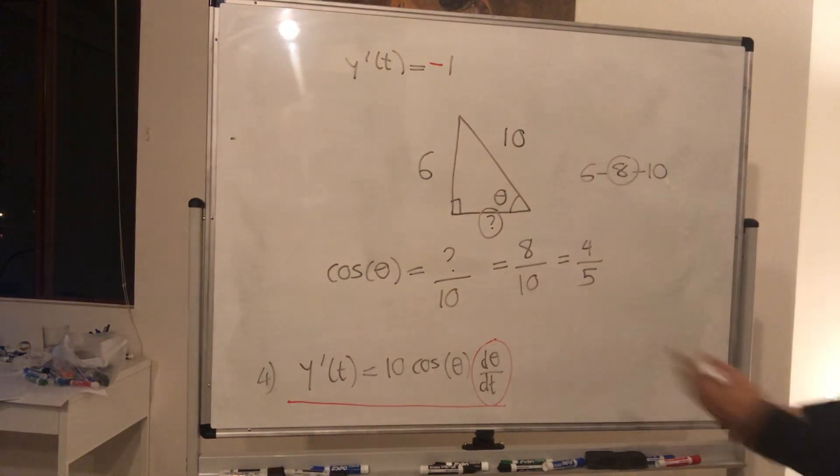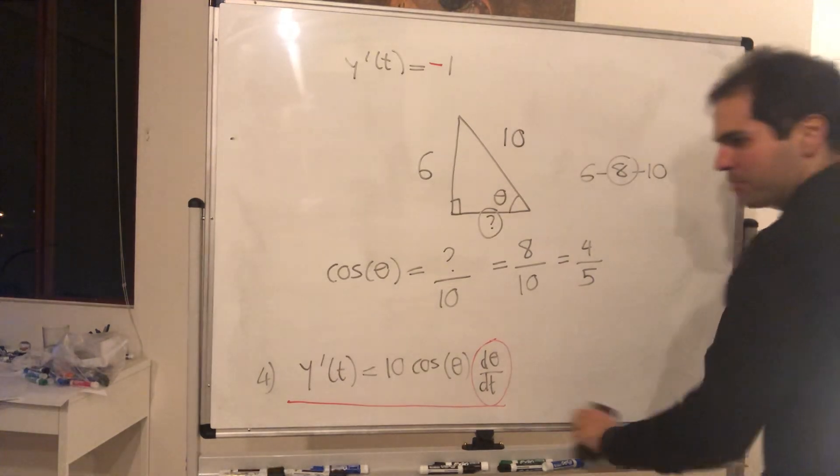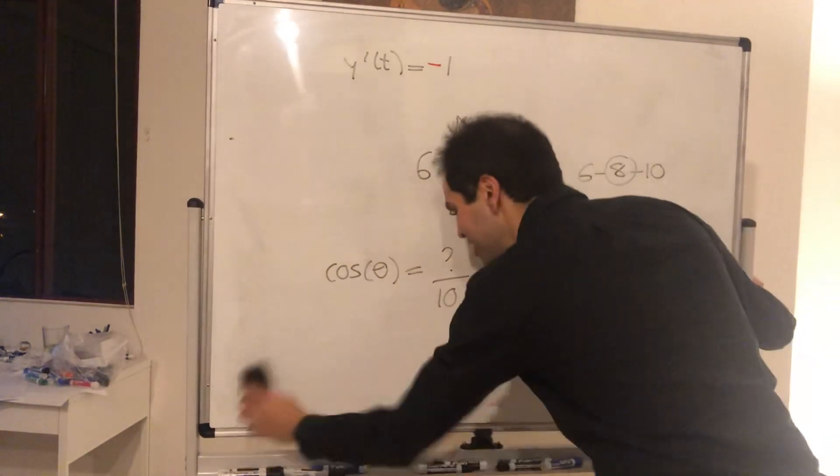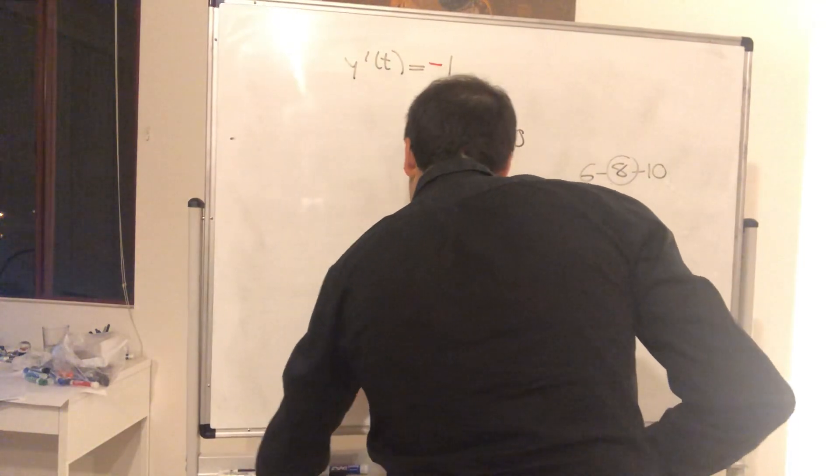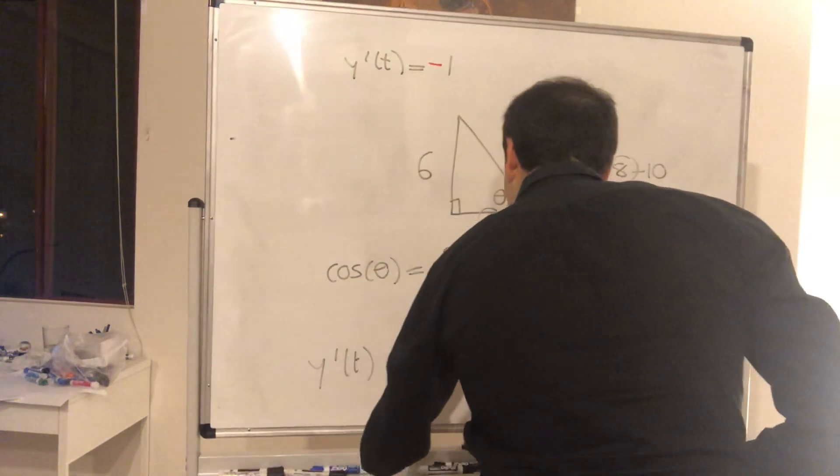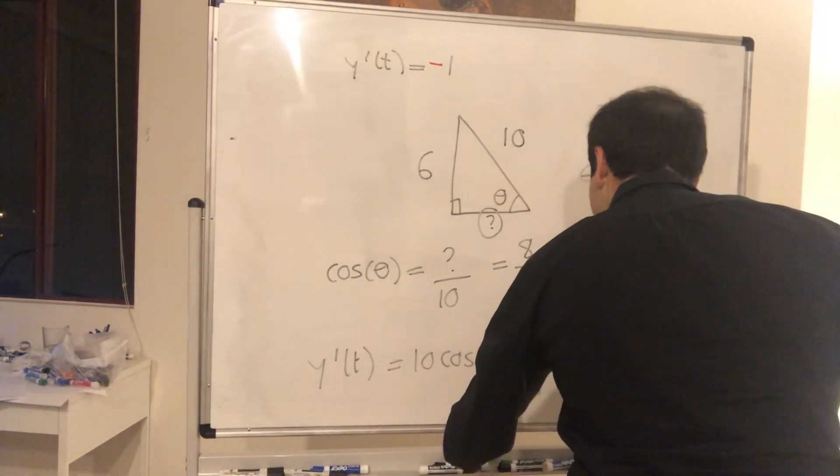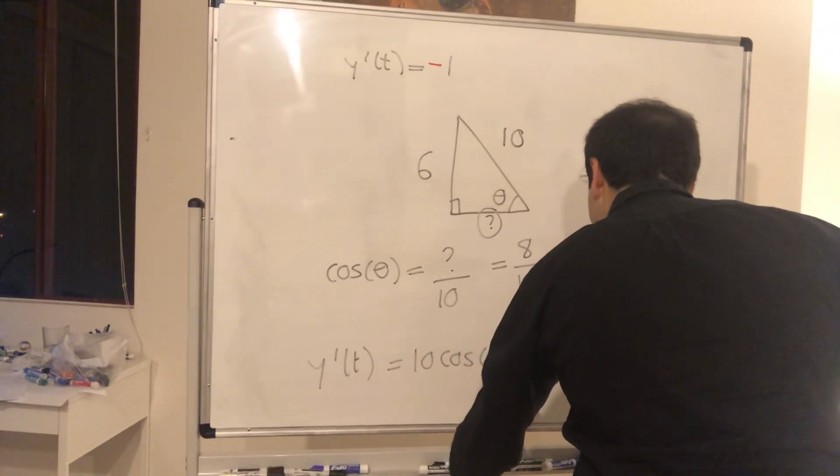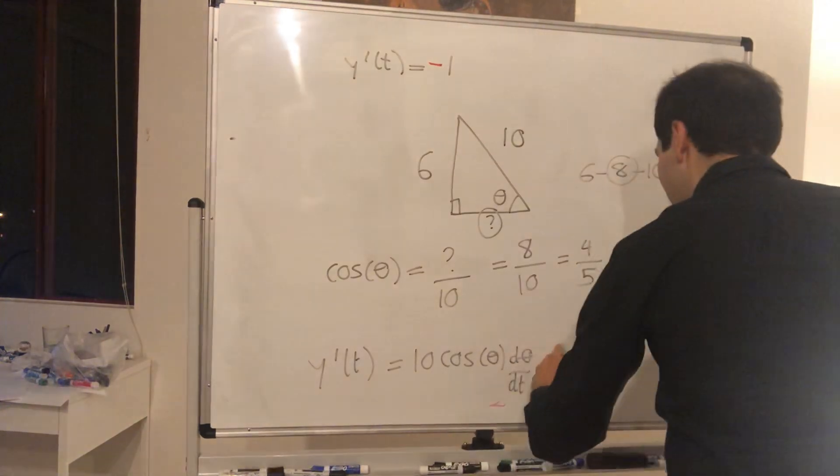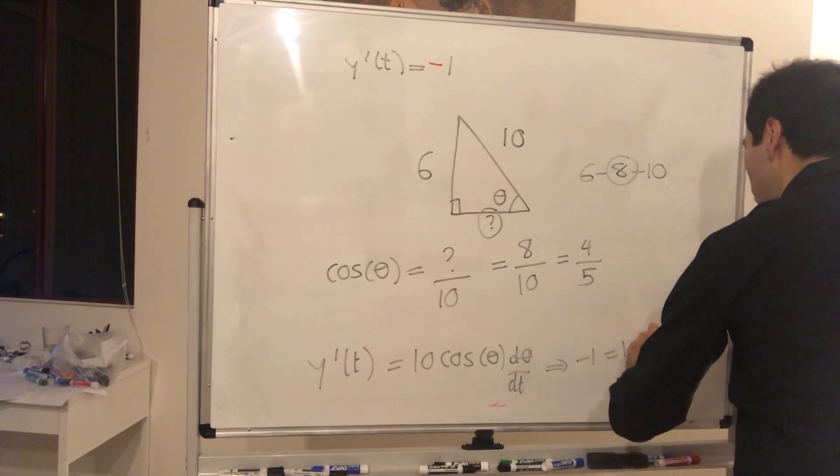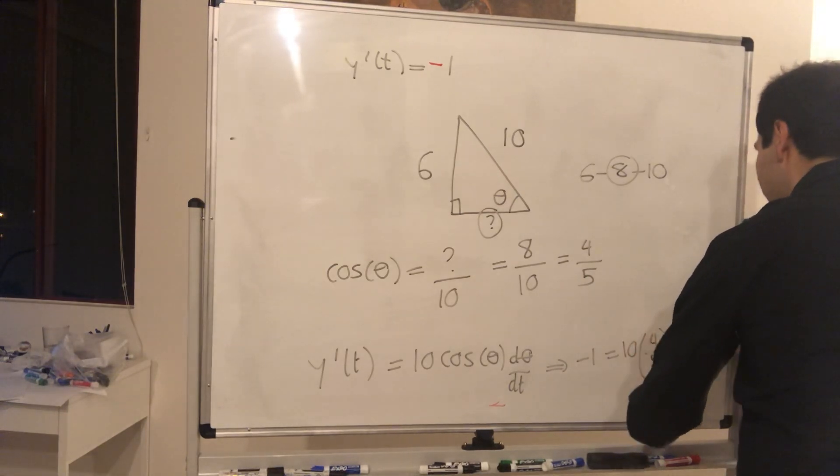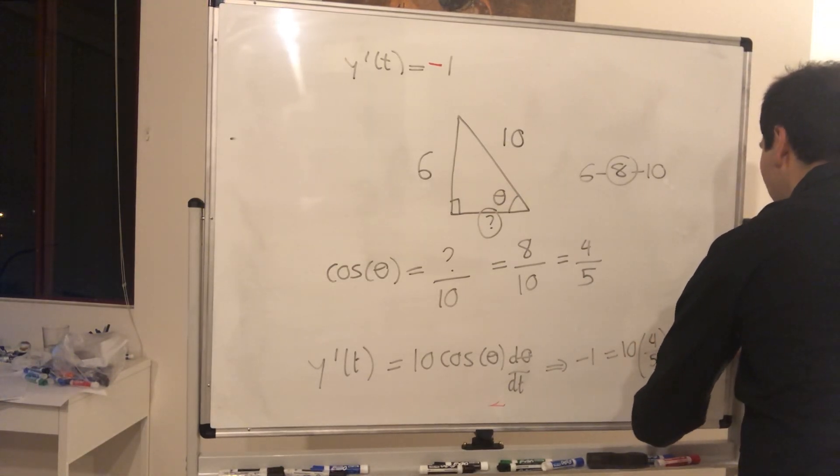And now using that info, we're ready to plug everything in. So let me erase this to rewrite it. So remember, y prime of t, what's 10 cosine of theta d theta over dt. So what we get is minus one equals 10 cosine of theta is 4 fifths times d theta over dt.